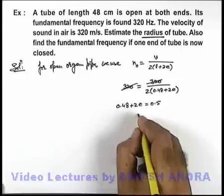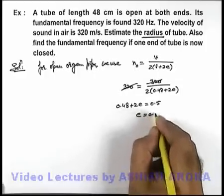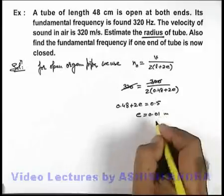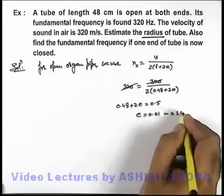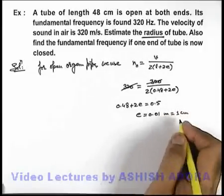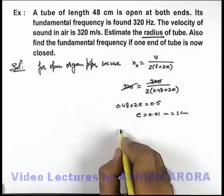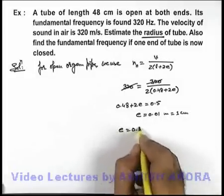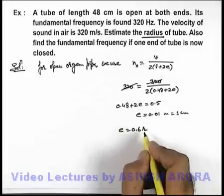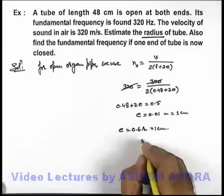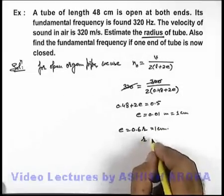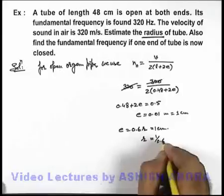This will give us the end correction to be 0.01 meters, which is equal to 1 centimeter. Now in this situation, we know that end correction can be given as 0.6r, where r is the radius of the tube. So the radius of the organ pipe here can be given as 1 by 0.6.